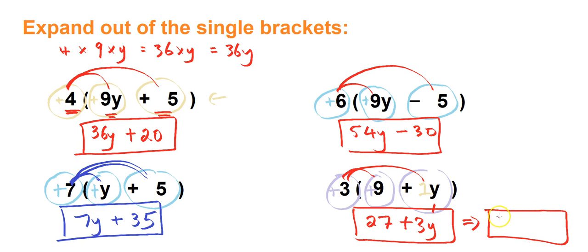So we could write 3y plus 27, which is probably the better way to put it because we would normally put terms with coefficients and variables first, and then constants.